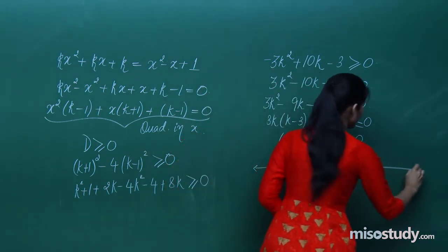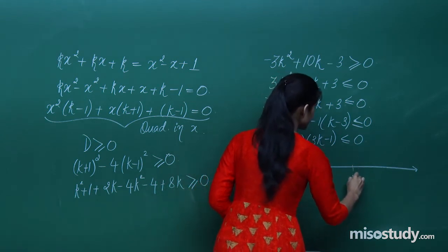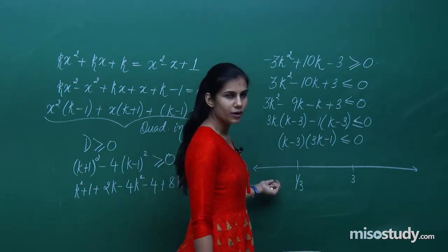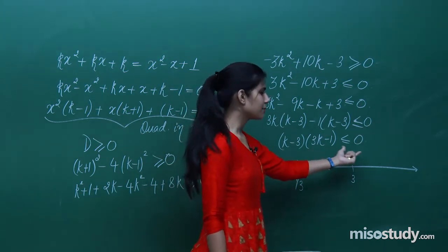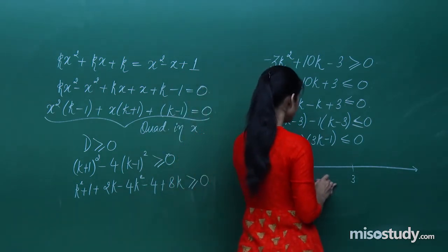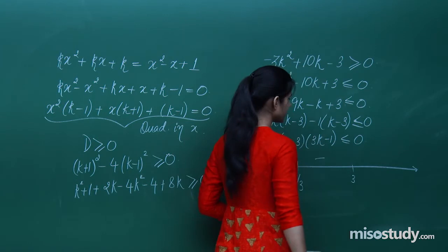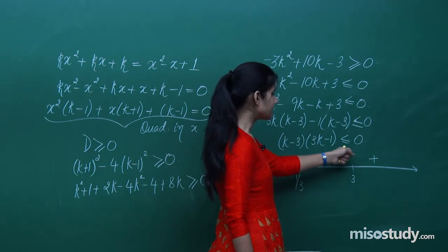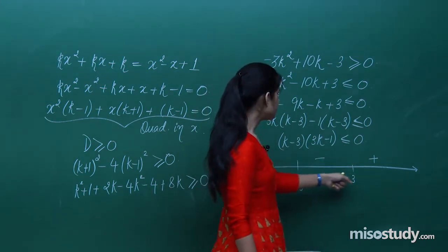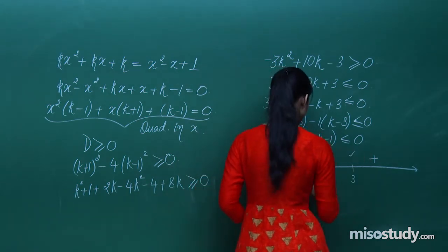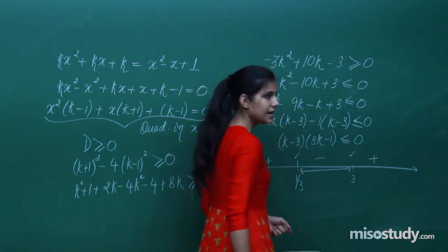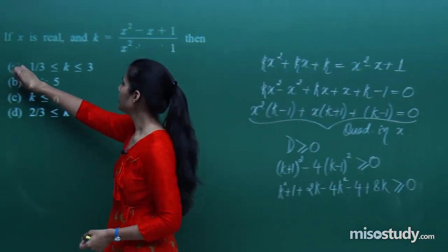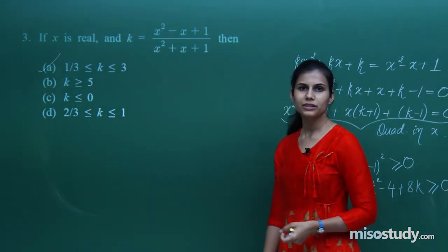The critical values are k = 1/3 and k = 3. Analyzing signs: for k < 1/3, both factors are negative so the product is positive. Between 1/3 and 3, one factor is positive and one negative, so the product is negative. For k > 3, both are positive. We need the product ≤ 0, so k ∈ [1/3, 3].